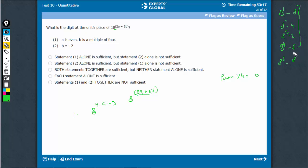every power which is a multiple of 4 will lead to a units place of 6. We know that if a is a multiple of 2 and b is a multiple of 4, the power is going to be a multiple of 4 and therefore, the last digit of 18 raised to power, whatever this is, is going to be 6.